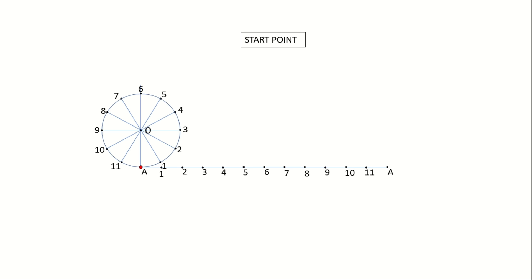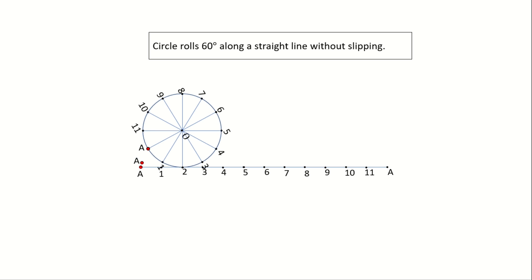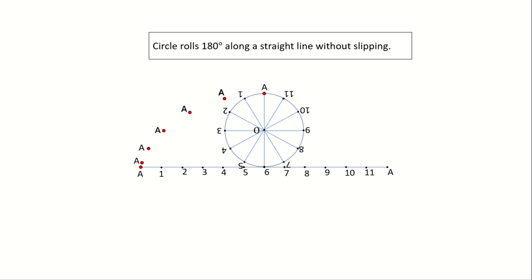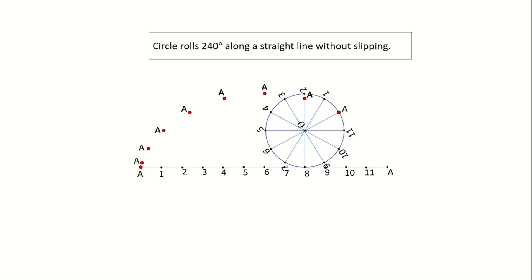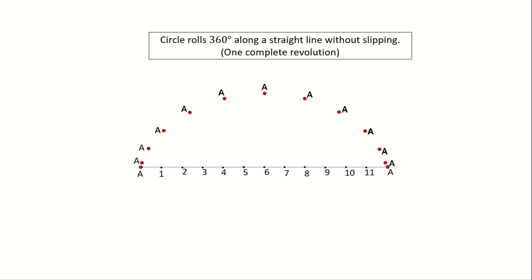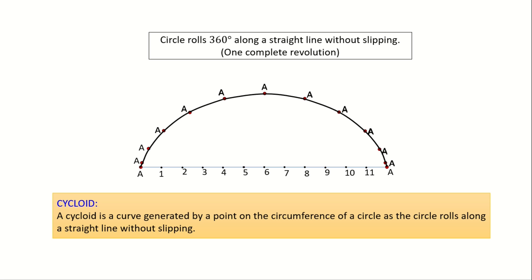Let us see an animation. The point A is touching the baseline. After 30 degrees of roll, the point A moves up. After 60 degrees of roll, the point A again moves up. The point A keeps on moving up till half the revolution. After half the revolution, the point A moves down. After one complete revolution, the point A comes back and touches the baseline. This path traced by point A is called cycloid — a curve generated by a point on the circumference of a circle as the circle rolls along a straight line without slipping.